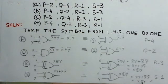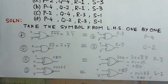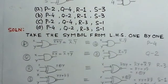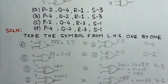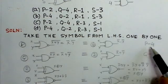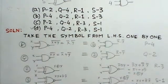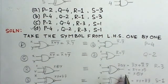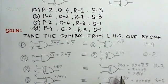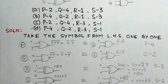So we are able to match all the gates, and so this corresponds to P4, Q2, R3, S1. So this is option D. The option D is P4, Q2, R3, S1. So these are the corresponding gates which are matching.